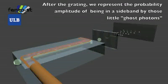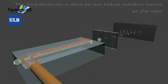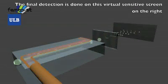After the grating, we represent the probability amplitude of being in a sideband by those little ghost photons. The final detection is done on this virtual sensitive screen on the right.